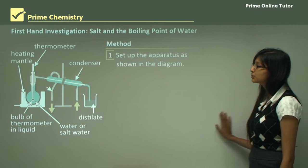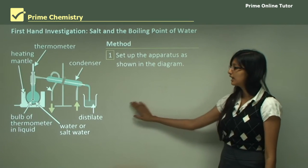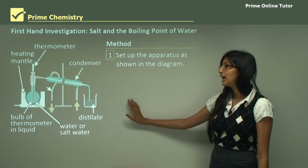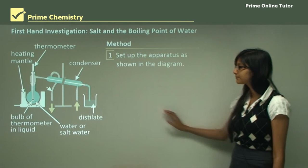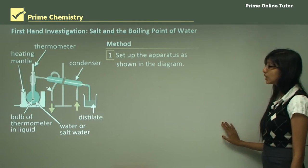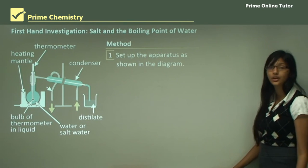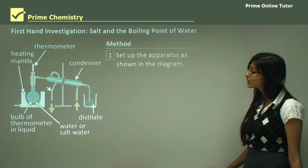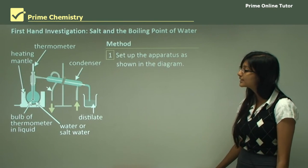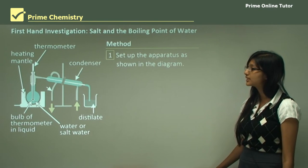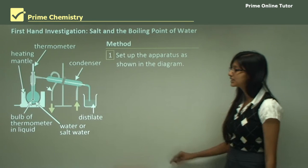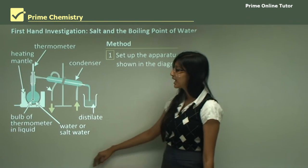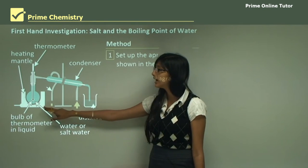Let's look at the method we will follow to conduct this experiment. First, we will use a distillation equipment setup with a condenser. Set up the apparatus as shown in the diagram — you will use retort stands, a condenser, a distillation system, and a beaker.